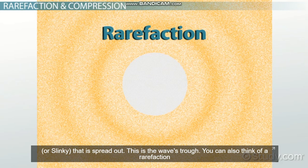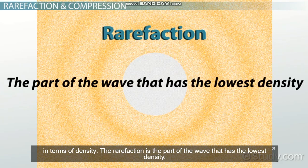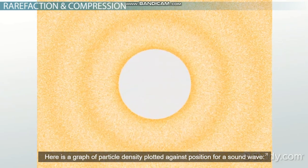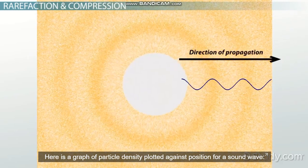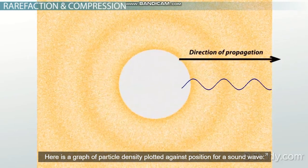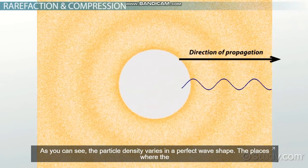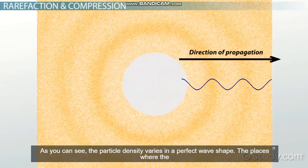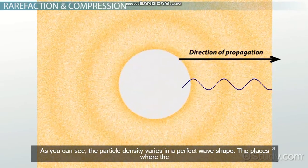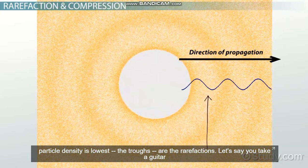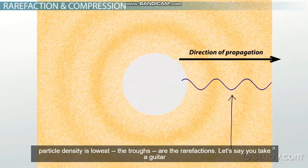You can also think of a rarefaction in terms of density. The rarefaction is the part of the wave that has the lowest density. Here's a graph of particle density plotted against position for a sound wave. As you can see, the particle density varies in a perfect wave shape. The places where the particle density is lowest — the troughs — are the rarefactions.